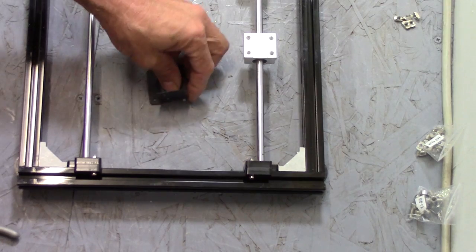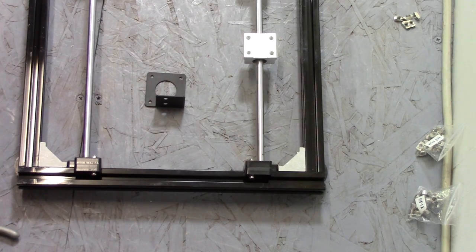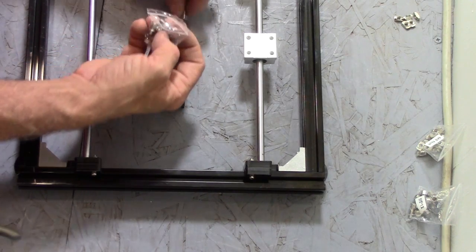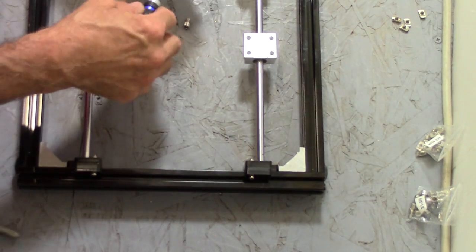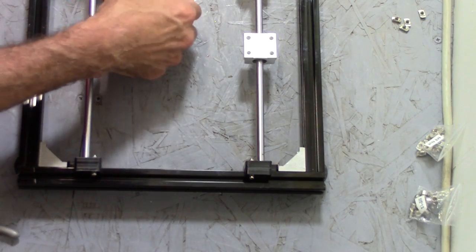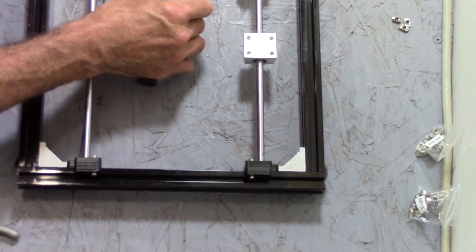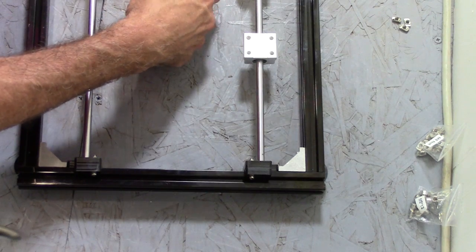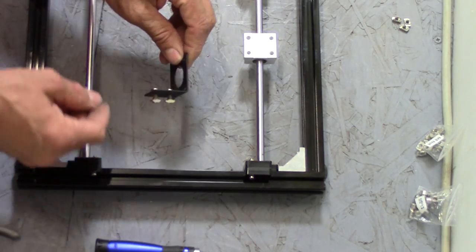Next up, we got the motor mount here for, let's see, that would be the X axis. M3, no, M5. We need some M5 by 8 millimeter bolts, two of those. And then we're going to use two of the nuts. The usual drill - put them through here first, get the nuts on, and then we're going to mount it to the rail.